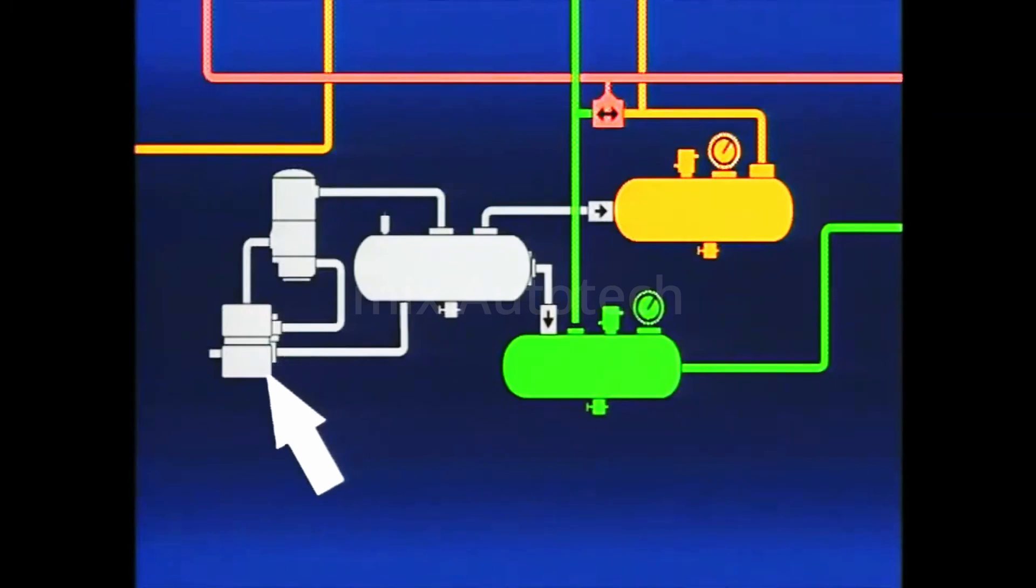The governor is used to control the compressor and thereby regulate air pressure in the supply reservoir.